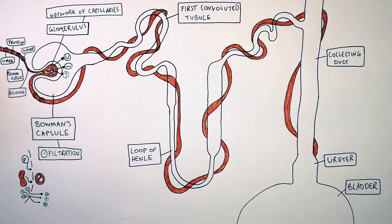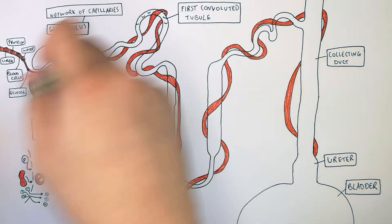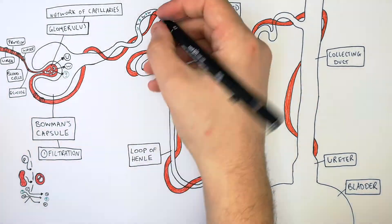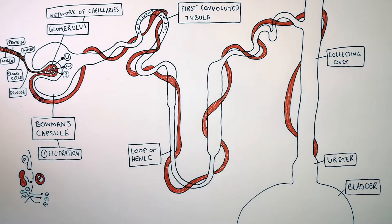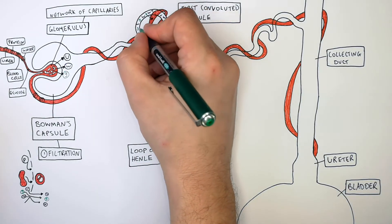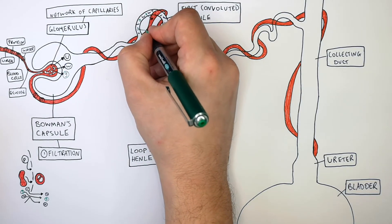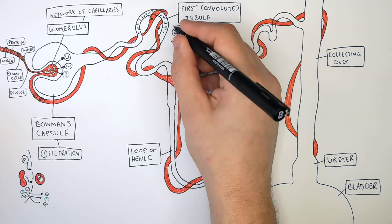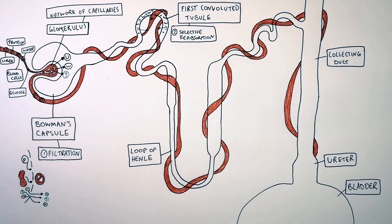In the first convoluted tubule, you find water, glucose, and urea — these were filtered from the glomerulus into the Bowman's capsule. It is in the first convoluted tubule that glucose is reabsorbed into the blood by active transport. This is where selective reabsorption happens — selective reabsorption of glucose back into the blood from the nephron. There should be no glucose in your nephron at this point; it should all be reabsorbed back into the blood.